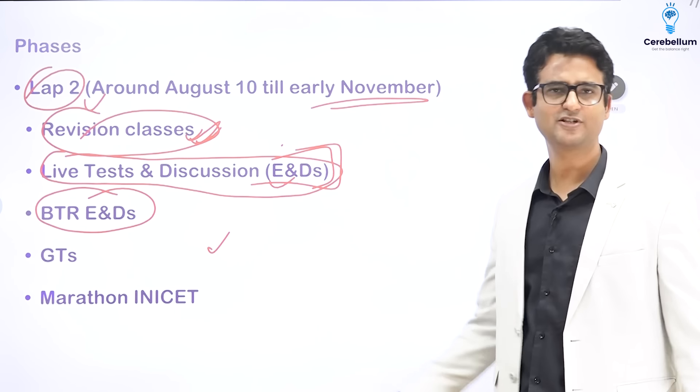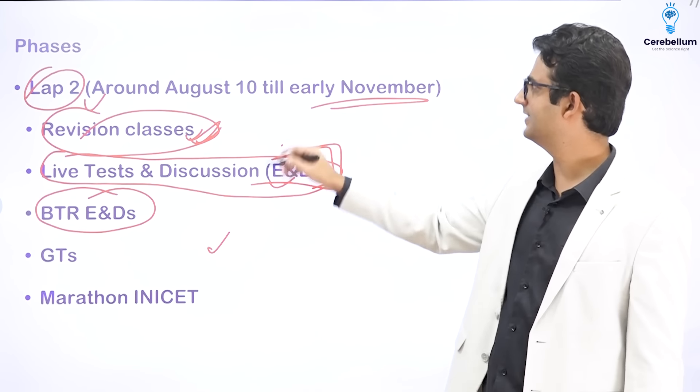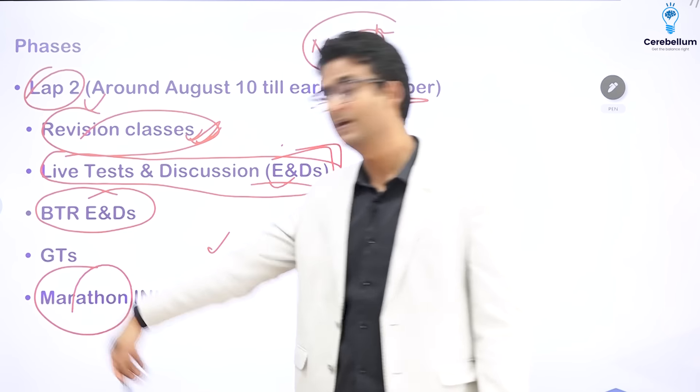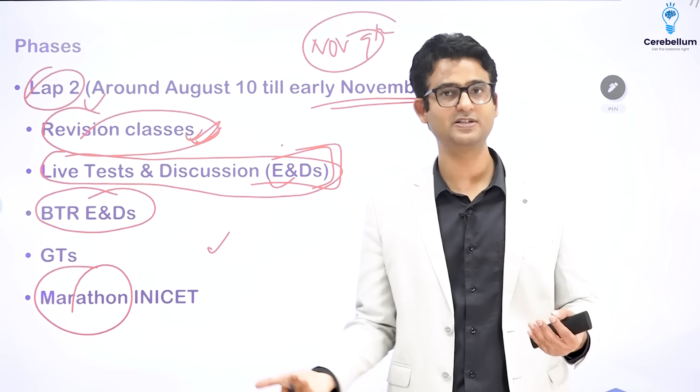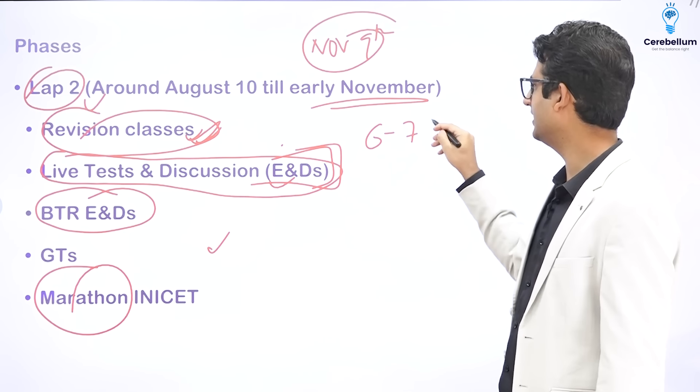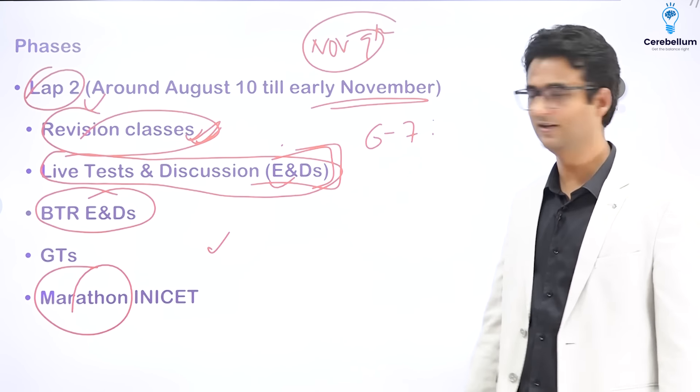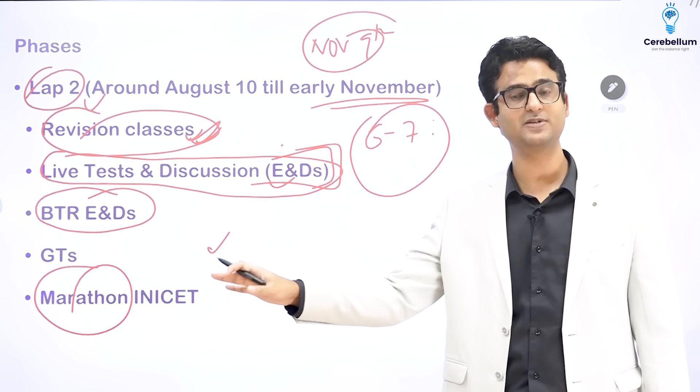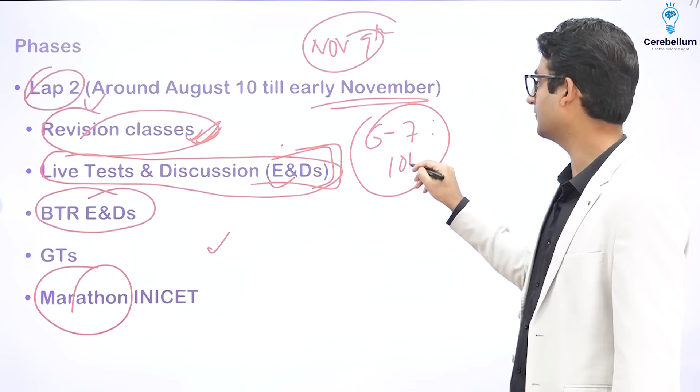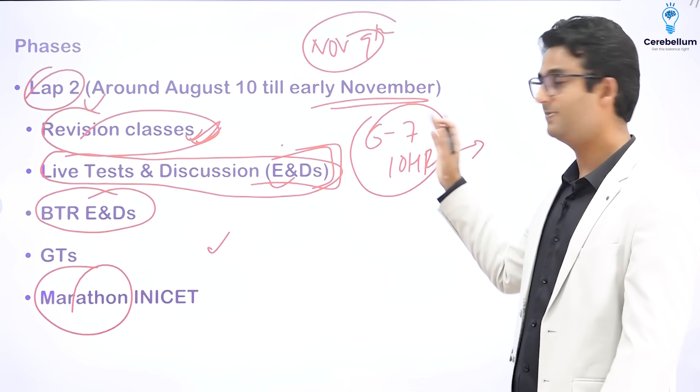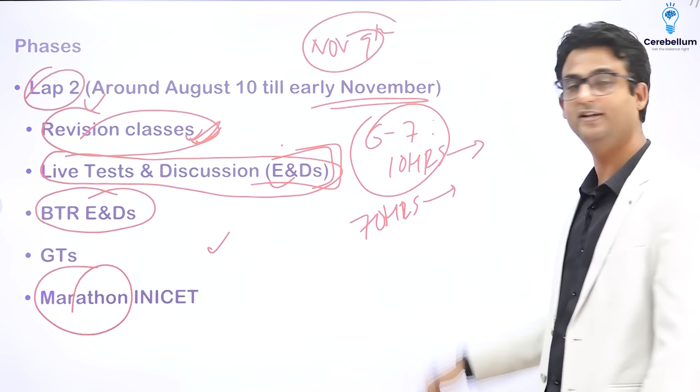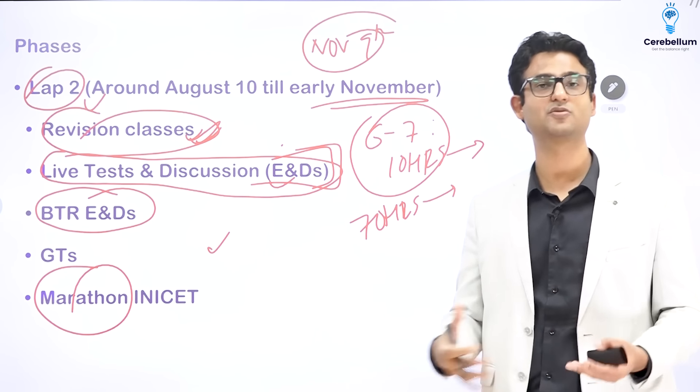GTs will continue. So it is going to continue till say 1st of November. I think we have INICET on November 9th. Now, in Cerebellum, we do something called as marathon. Before INICET and NEET PG and FMG, we have marathon classes. What is the concept of marathon class? In a span of 6 to 7 days, all the 19 subject faculties cover their respective subjects. So it usually goes like this. Every day, there is around 10 hours of live class. So 10 multiplied by 7. In 70 hours, everything that is needed and all that is important, it is covered right before the actual exam.